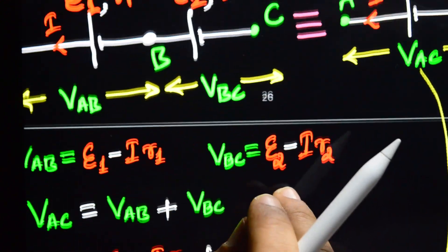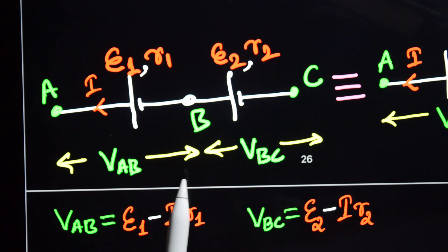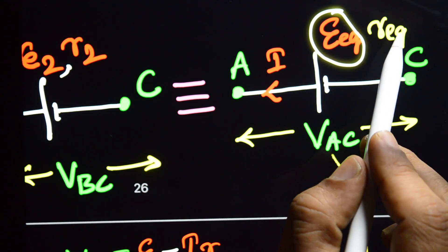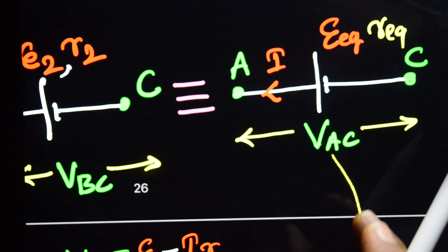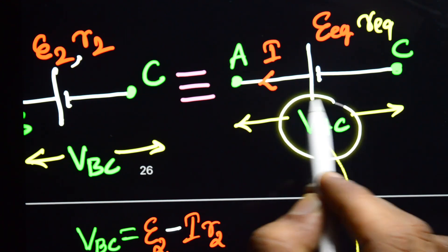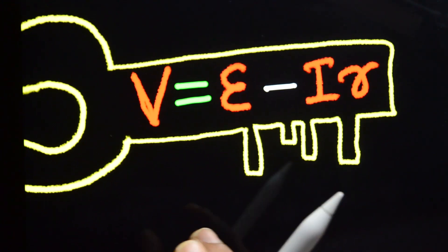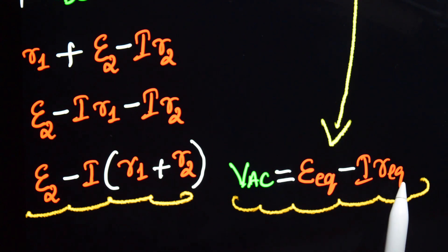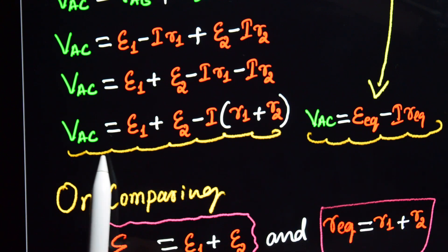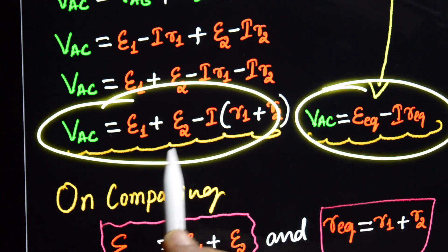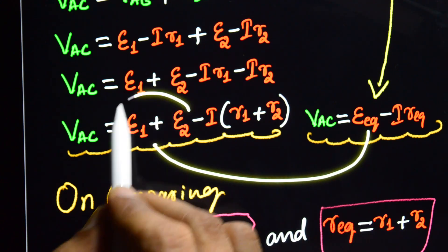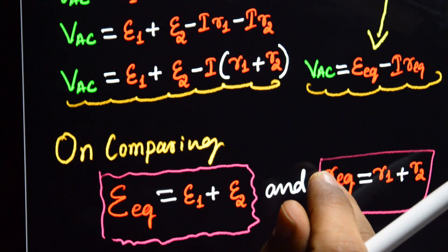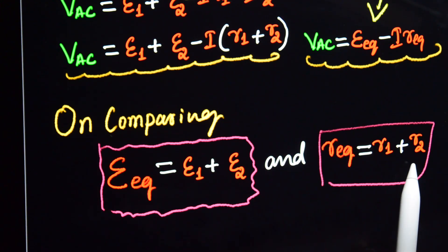Now, if we replace this combination by a single cell, its EMF is E equivalent and its internal resistance is R equivalent. We can express its terminal potential difference as: VAC equals E equivalent minus I into R equivalent. Comparing these two equations, E equivalent equals E1 plus E2, and R equivalent equals R1 plus R2.